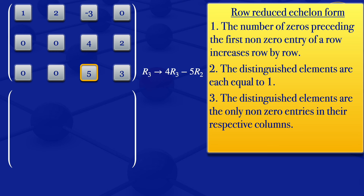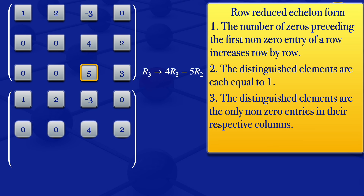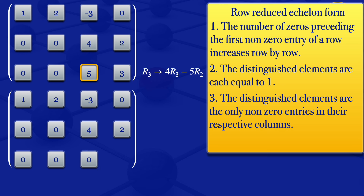So we get another matrix. The first and second rows are not changing. For the third row: four times zero minus five times zero gives zero; four times zero minus five times zero gives zero; four times five minus five times four gives 20 minus 20, which is zero; then four times three minus five times two gives 12 minus 10, which gives us two.